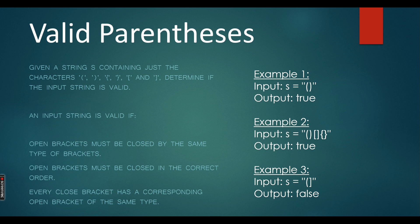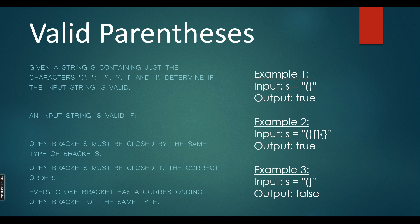This is the valid parentheses or balanced parentheses problem. We will be given a string containing only parentheses — small brackets, curly brackets, and square brackets, both opening and closing. You need to determine if that input is balanced or not. Balance means the order in which the opening bracket appears, a closing bracket must appear in the same order. Every closing bracket must have a corresponding opening bracket of the same type.